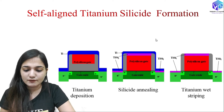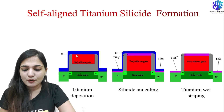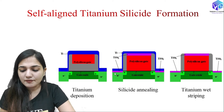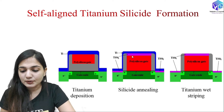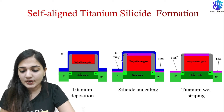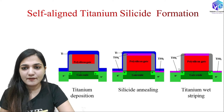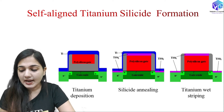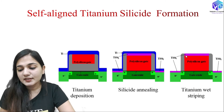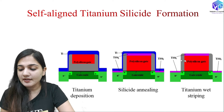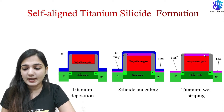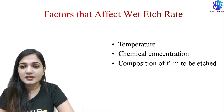Now coming to the self-aligned titanium silicide formation. First, we have titanium deposition for the metallization process — the titanium layer is deposited over the polysilicon. During silicide annealing, titanium reacts with the polysilicon and forms TiSi₂. Then during the titanium stripping step, I strip off the unreacted titanium using the process discussed earlier, which is highly selective, so the TiSi₂ layer remains intact.